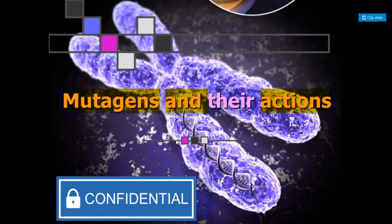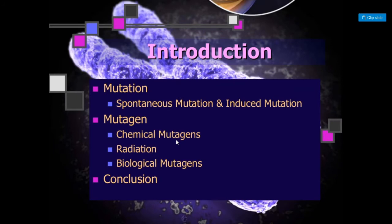Let's start with a quick revision of mutation and its types. Mutation is the sudden change in the sequence of nucleotides of DNA. These mutations may be spontaneous mutation or induced mutation. There are mutagenic agents which are responsible for the sudden change in the sequence of the DNA molecule.